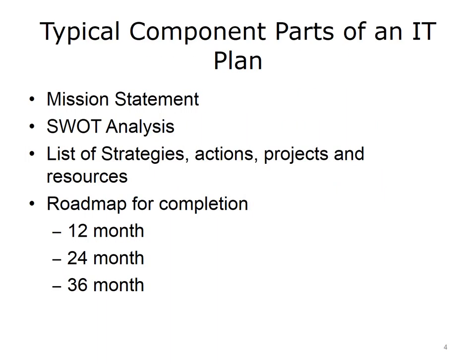Previously, you learned about the stages and steps of the Strategic Information Systems Planning Process. While that presentation provided a view of the steps in the planning process, it did not describe the content of the plan. The content of an IT plan can vary widely depending on the organization, the time it was created, and the resources committed to its creation. At a minimum, IT plans should include the following items.